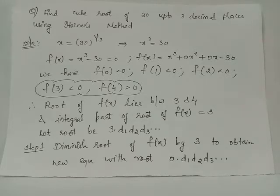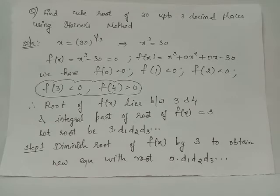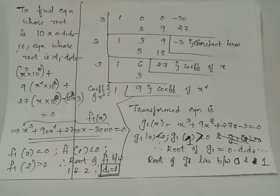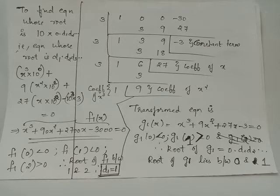The root of f(x) will be of the form 3.d1d2d3 etc., and we wish to find the digits d1, d2, d3 which appear after the decimal point. The first step is to diminish the root of f(x) by 3 using the synthetic division method, so we get a new equation whose root will be of the form 0.d1d2d3 etc. We write the coefficients of f(x): 1, 0, 0, -30, and diminish by 3.